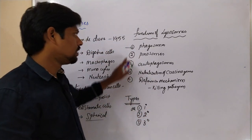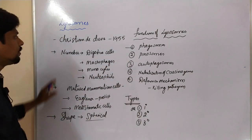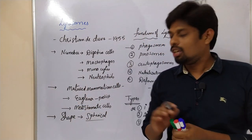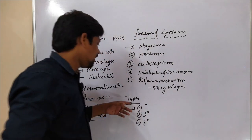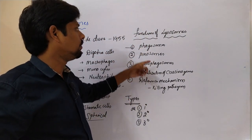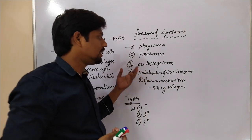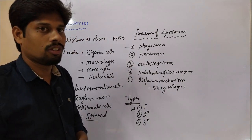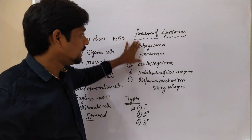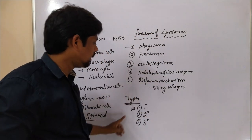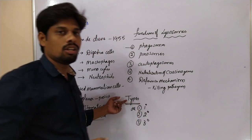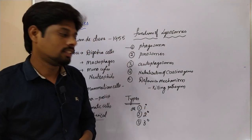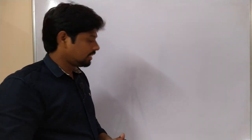So these are the types, these are the functions, this is the number, the shape, and also the scientist who discovered lysosomes. Now we have to understand what phagosomes, pinosomes, and autophagosomes are, how lysosomes neutralize carcinogens, and how they are involved in killing pathogens. We will clarify these three stages of lysosomes through an excellent diagram.